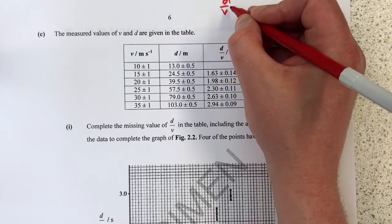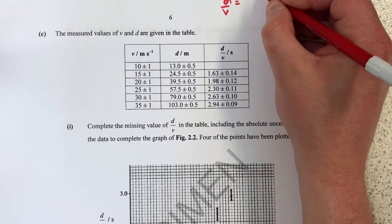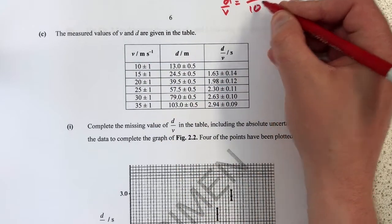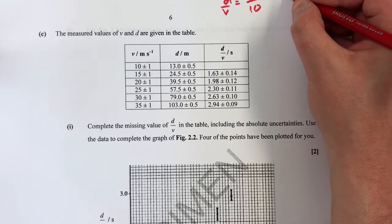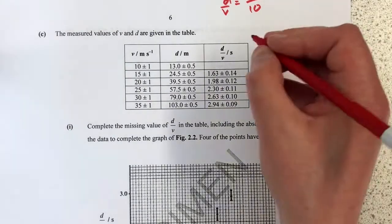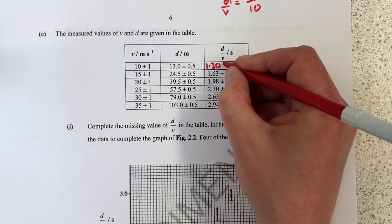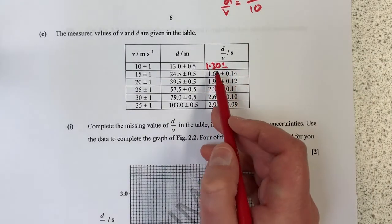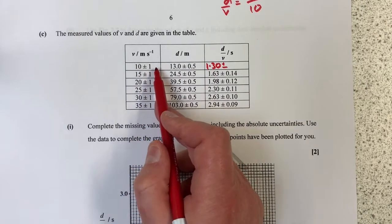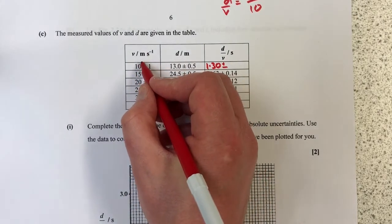D divided by V: 13.0 divided by 10, that's going to be 1.30. So 1.30 is the value plus or minus. Now what we have to do here is convert this into a percentage of uncertainty.